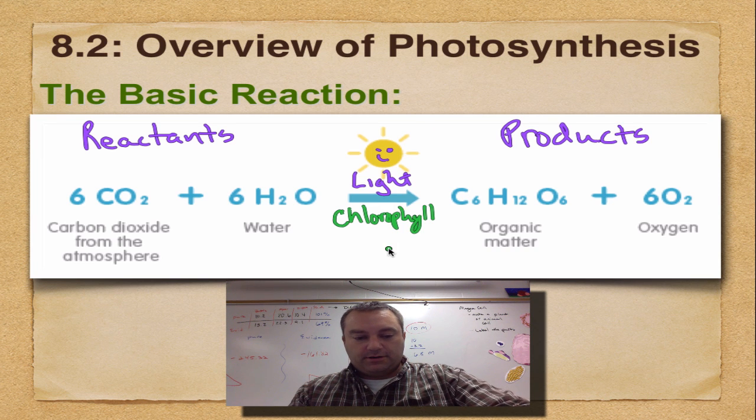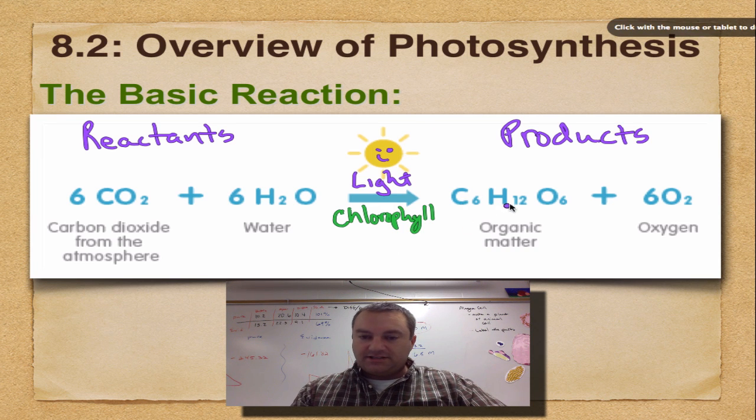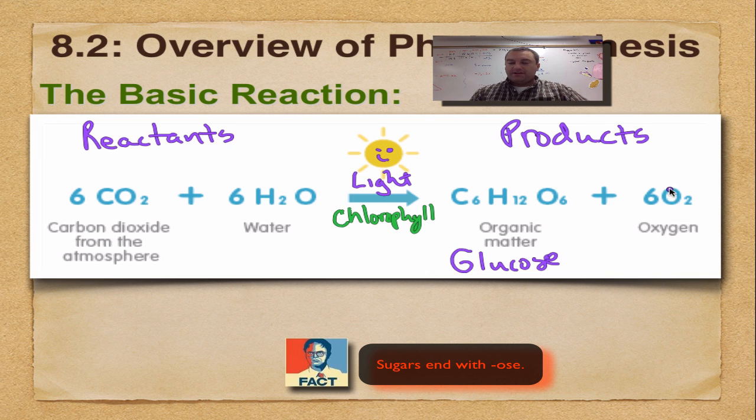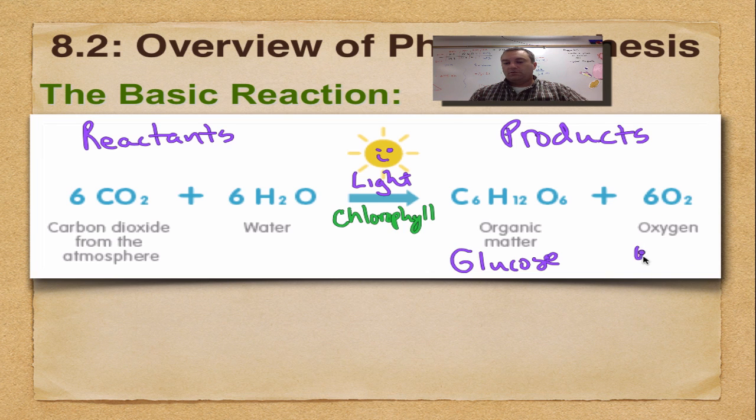You're going to get C6H12O6 which is the chemical formula for a sugar called glucose. It's one of those monosaccharides. And then you're going to get oxygen which is a waste product, which is good because we need to breathe that stuff in. So the oxygen that we breathe is made by plants and other photosynthetic organisms.